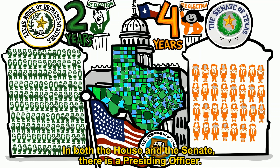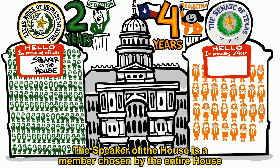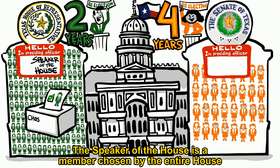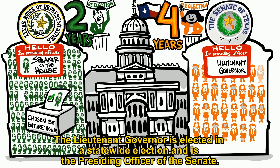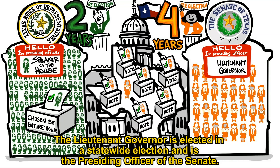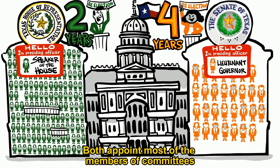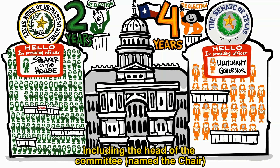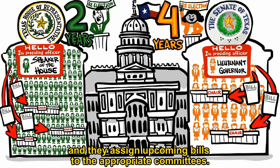In both the House and the Senate, there's a presiding officer. The Speaker of the House is a member chosen by the entire House to serve as the presiding officer of the House of Representatives. The lieutenant governor is elected in a statewide election and is the presiding officer of the Senate. Both appoint most of the members of committees, including the head of the committee, named the chair, and they assign upcoming bills to the appropriate committees.